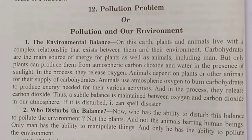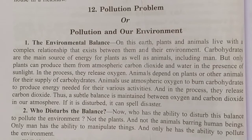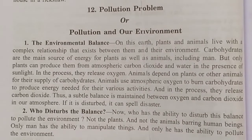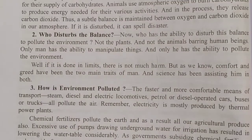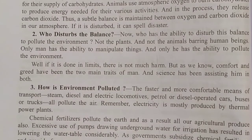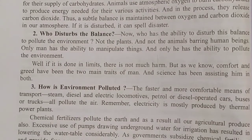The second paragraph is titled 'Who Disturbed the Balance.' Who has the ability to disturb this balance and pollute the environment? Not the plants, not the animals — only human beings. Only man has the ability to manipulate things and pollute the environment. If it is done within limits there is not much harm, but comfort and greed have been the two main traits of man, and science has been assisting him in both.